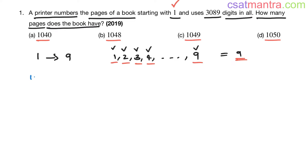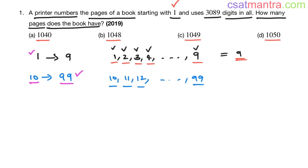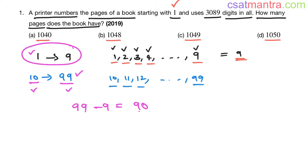Now page number 10 to page number 99 — every page has two digits. From page number 1 to 99 there are 99 pages; subtract the first 9 pages, so from 10 to 99 there are 90 pages. Each page has two digits, so total 180 digits.